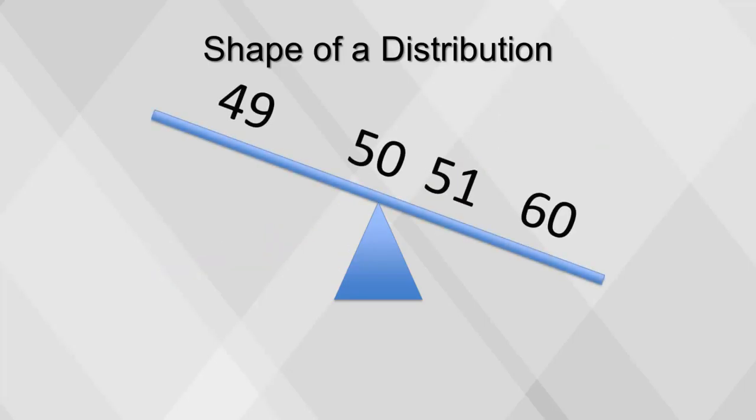Similarly, we can make the sequence positively skewed by adding a value far above the mean: 49, 50, 51, 60. This produces a right skew.